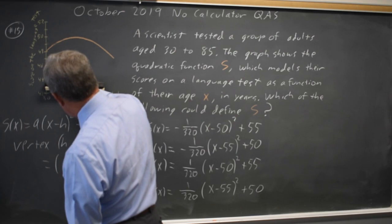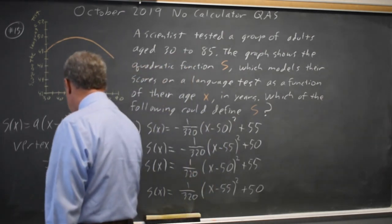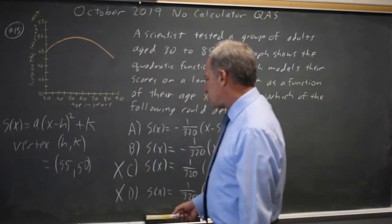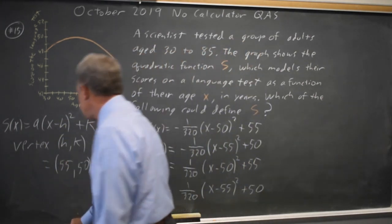maybe 55. And so since this is HK, H is 55.